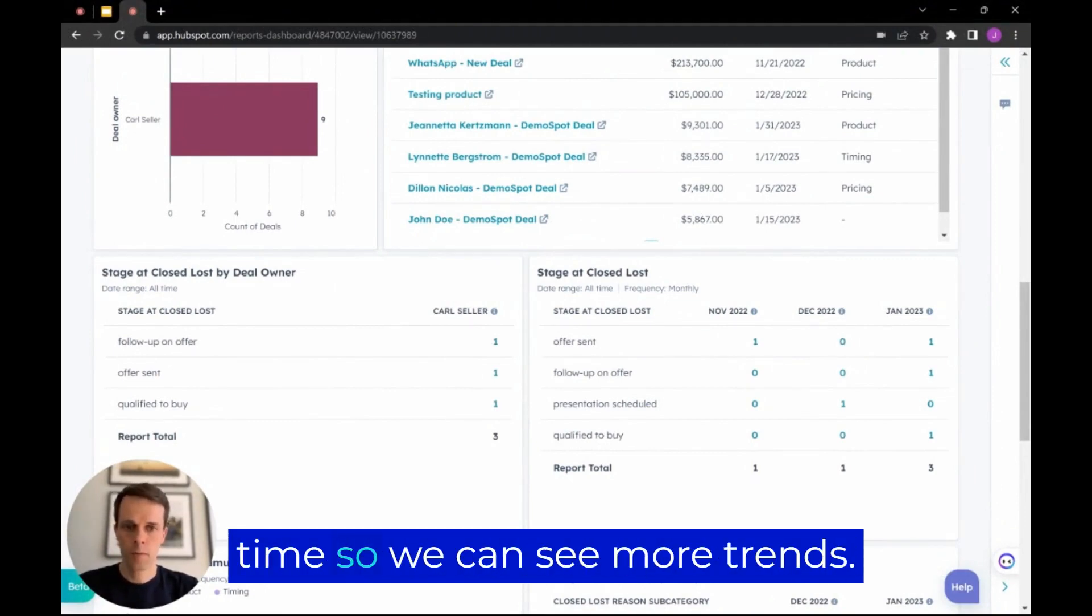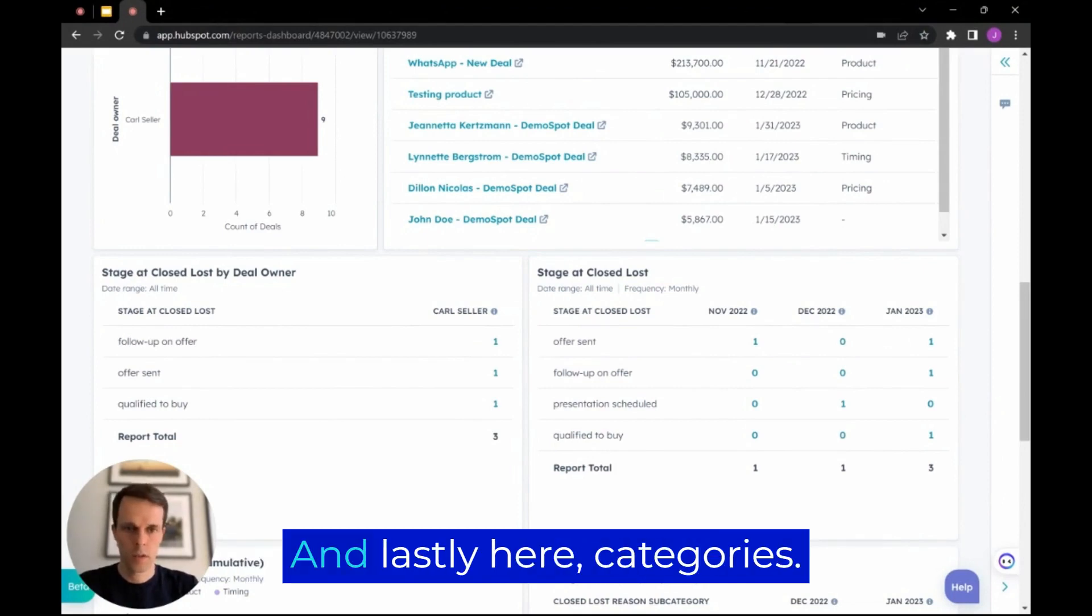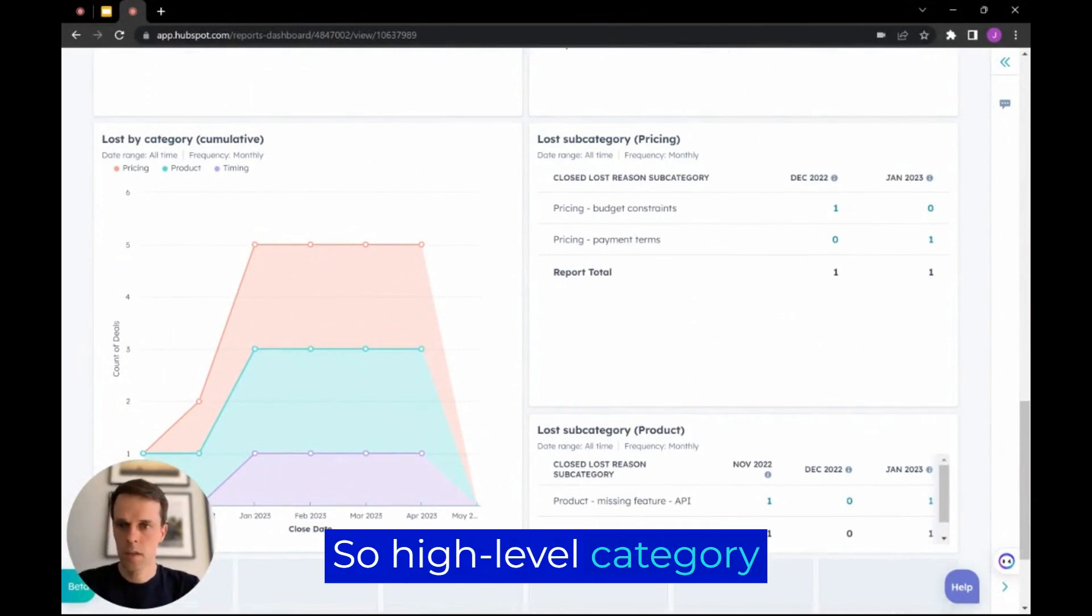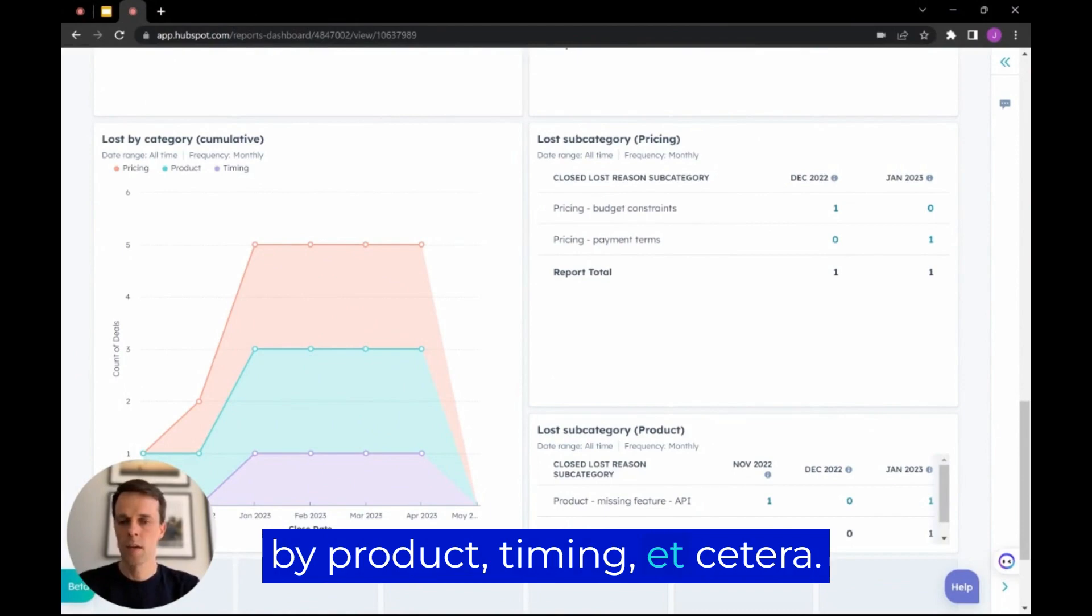And over time, so we can see more trends. And lastly here, categories. So high level category, whether it's caused by pricing, whether it's caused by product, timing, etc.